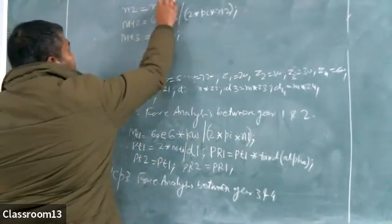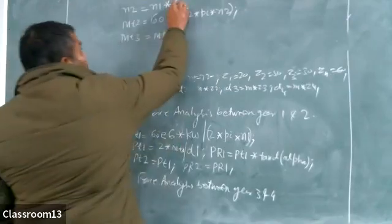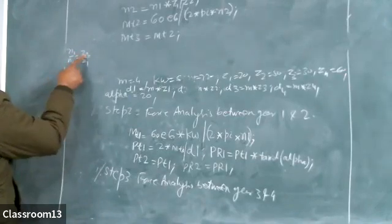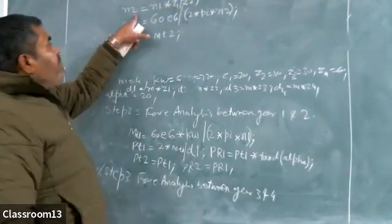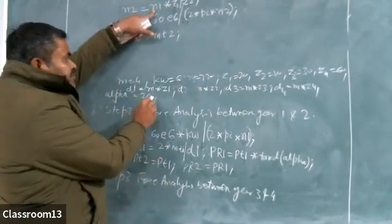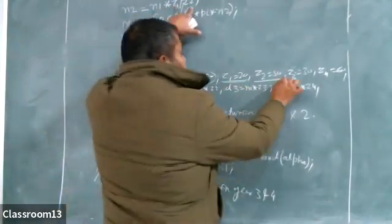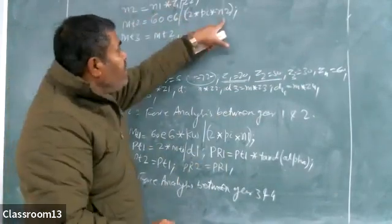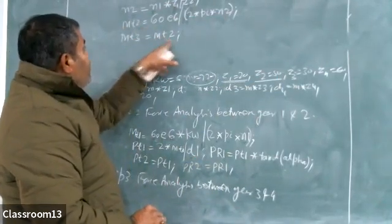N2 is given by N1 × Z1 / Z2. The formula is N1/N2 = Z2/Z1. N1 is 720, Z1 is 20, Z2 is 50. So there is no problem calculating N2. This N2 will be picked in the Mt2 formula. So in Mt2 there will be no problem.